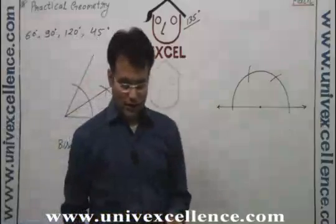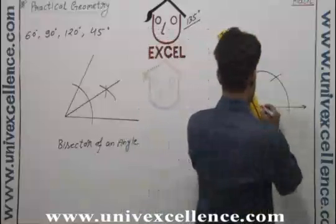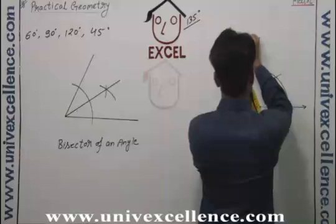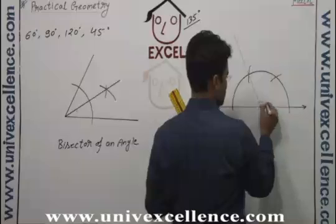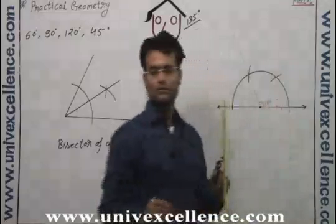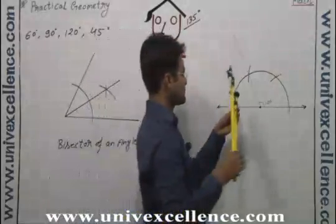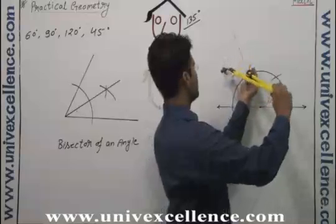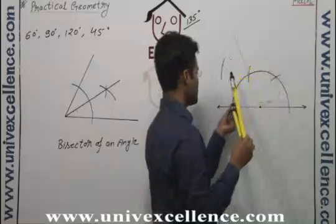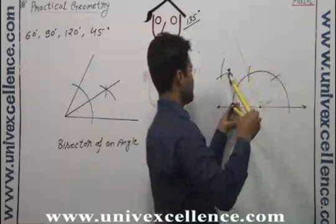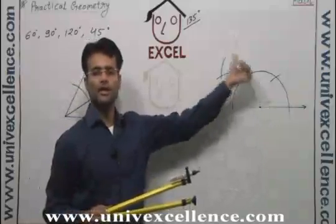Now in this 120... this is the 120, from this 120, from this 120, from this point make an arc. This point make an arc, from the point of 180, from the point of 120, make two arcs.